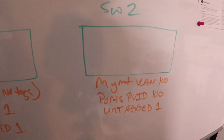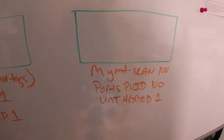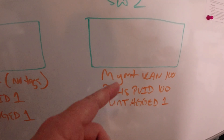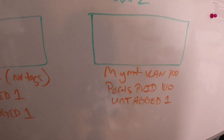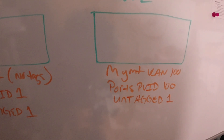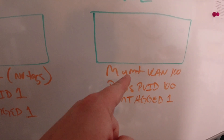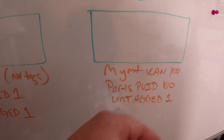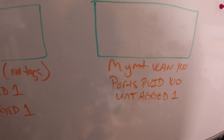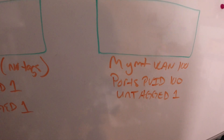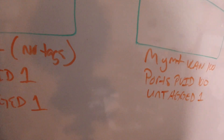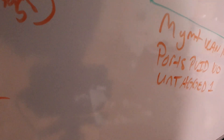Over on switch two, it has a management VLAN of 100. The ports are all PVID 100, and they're all untagged — that should be 100, not one.